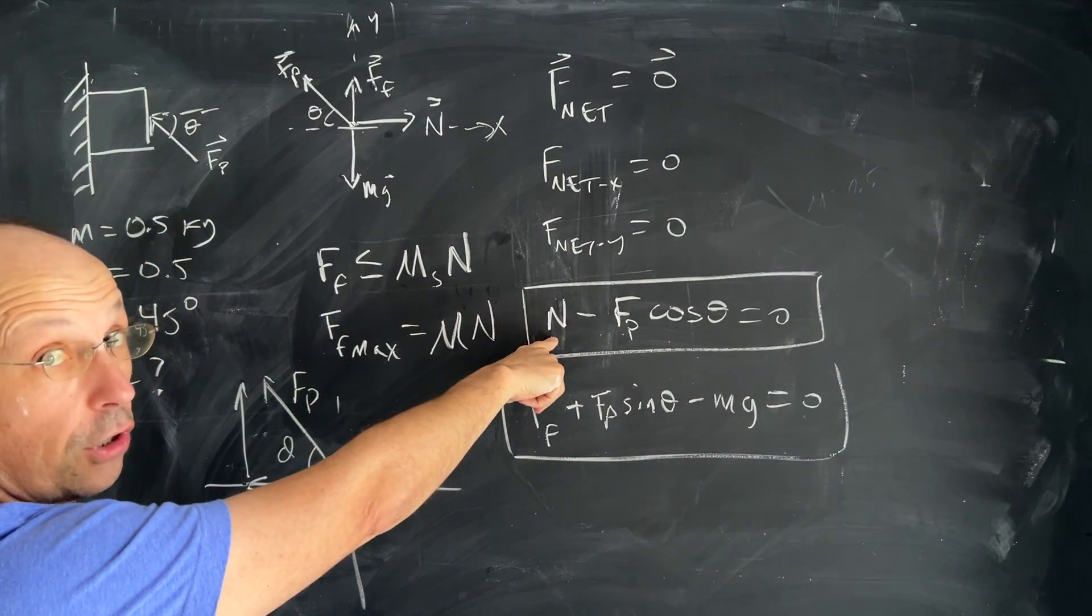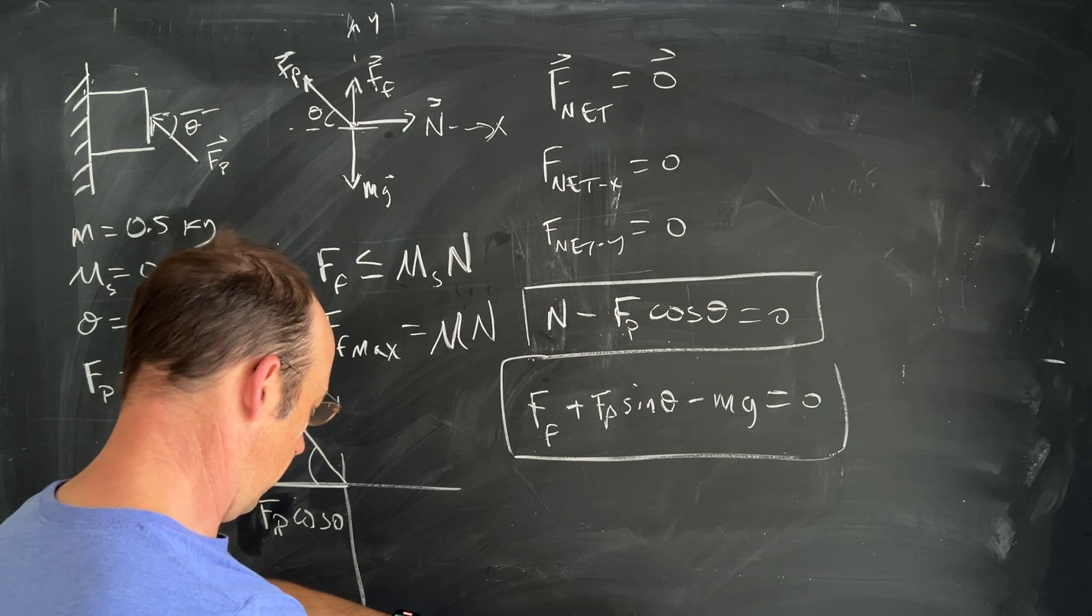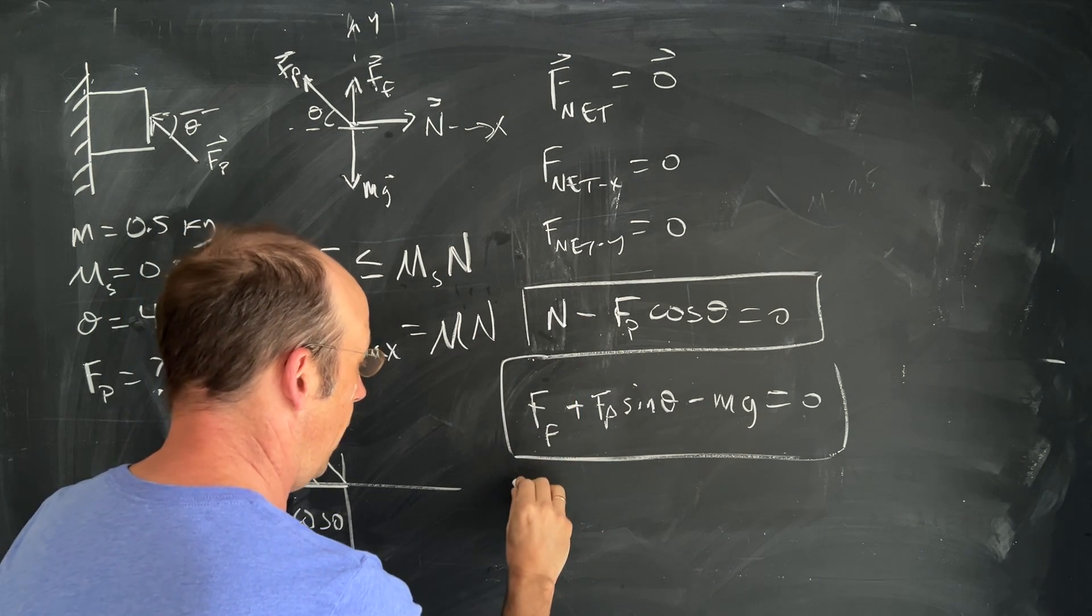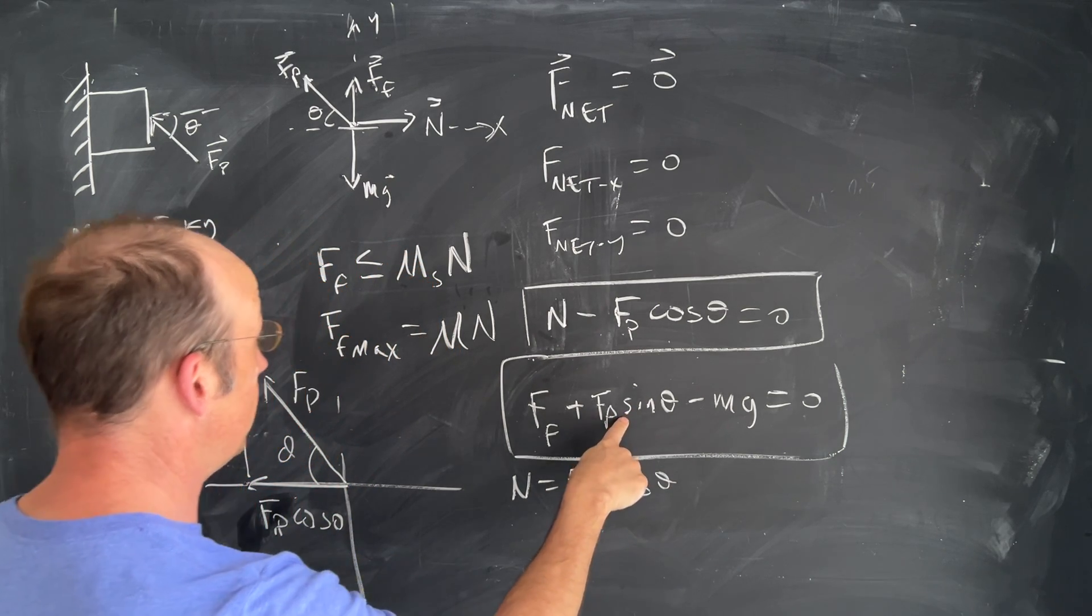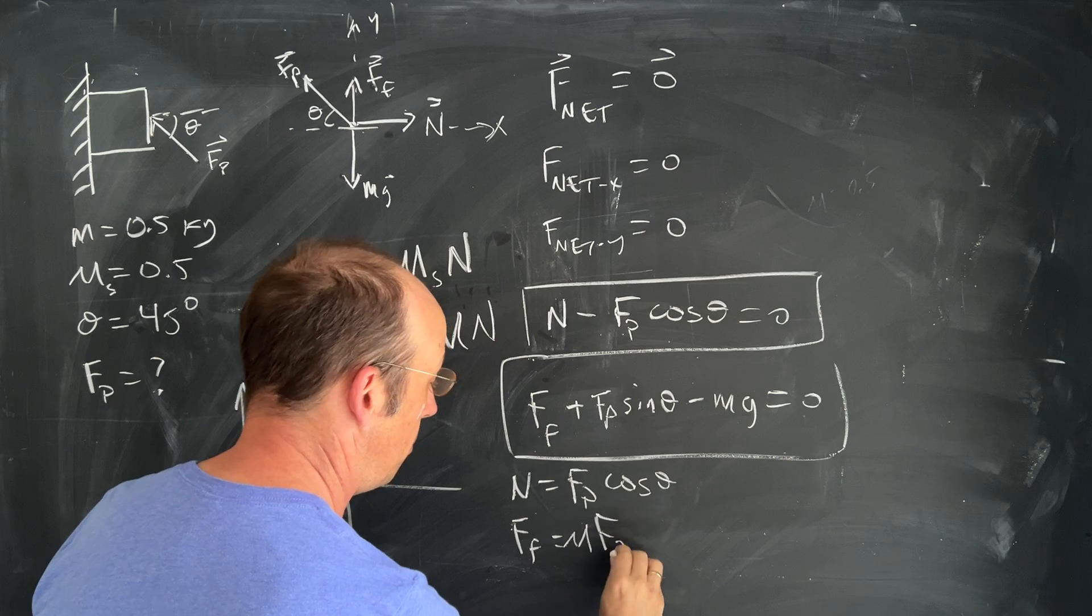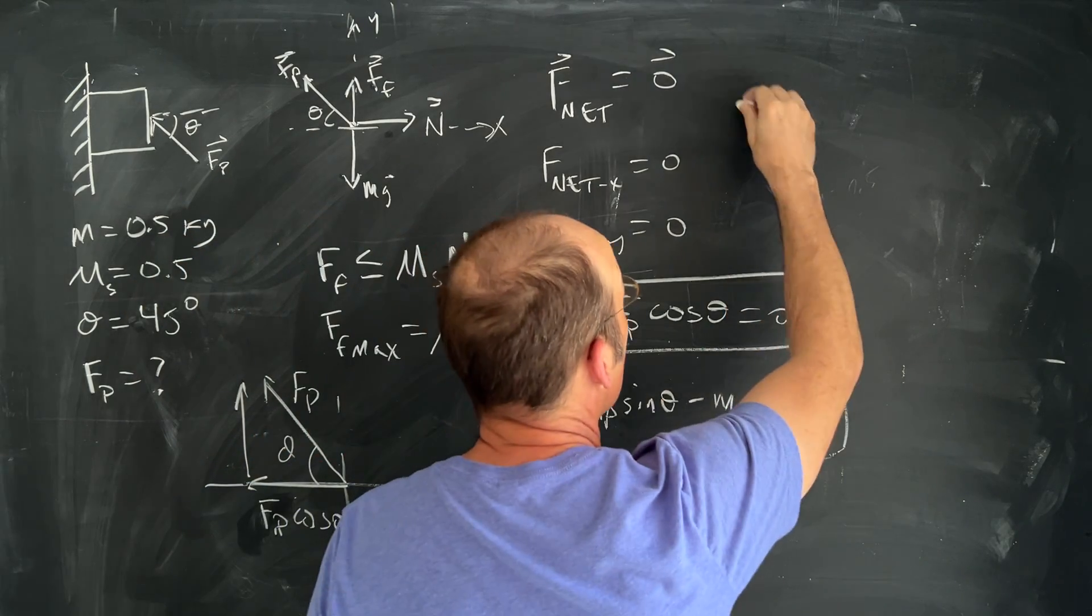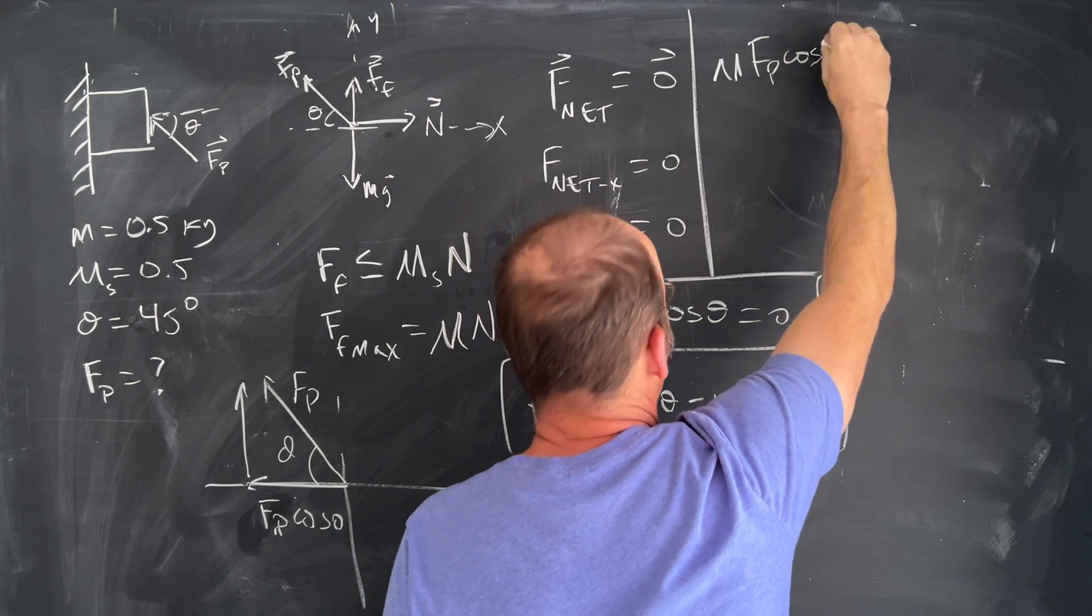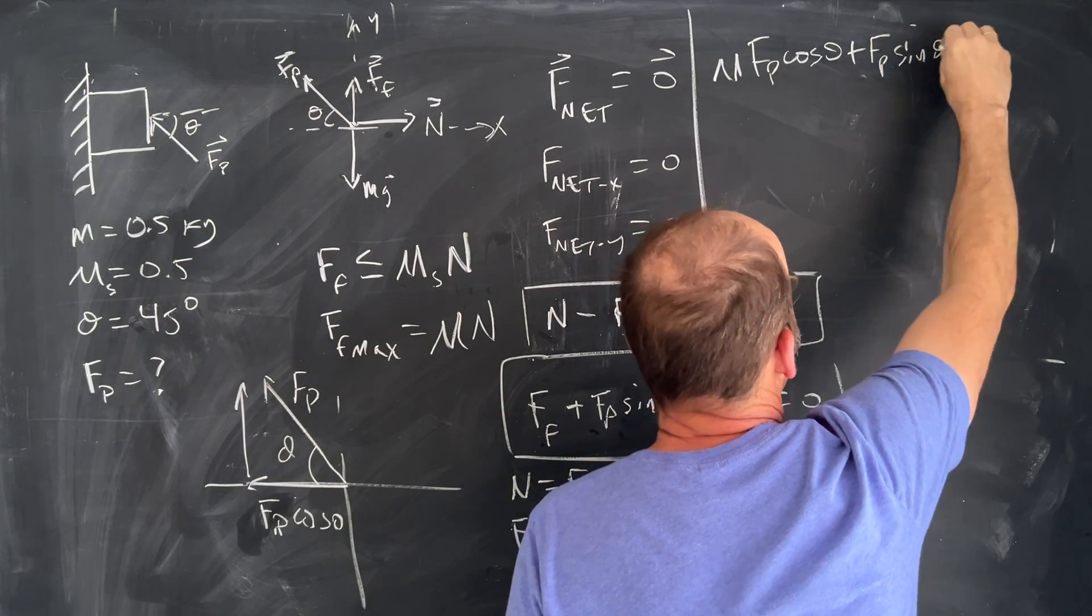Okay so right up here I can solve this for n. If I solve that for n I get n equals fp cosine theta and then if I use that along with this I get the friction force f friction is μ times n which is fp cosine theta. So let's put that in right up here. I have friction force is μ fp cosine theta and then I have fp sine theta and then I have minus mg.